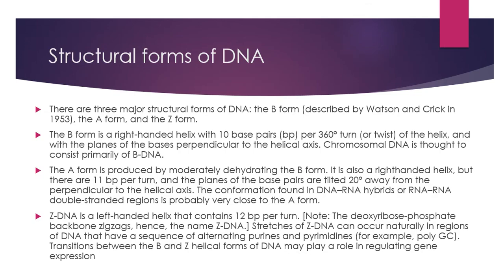There are three major forms of DNA: B form, A form, and Z form. The main form present in human beings is the B form. According to different experiments, DNA can exist in up to six forms in a test tube. The B form is a right-handed helix containing 10 base pairs per turn, and it is the most common form in living systems. The A form is the dehydrated form of B form; it is also right-handed but contains 11 nucleotide base pairs per turn, and is mostly found in DNA-RNA hybrids.